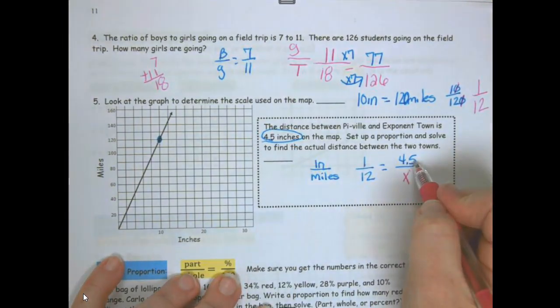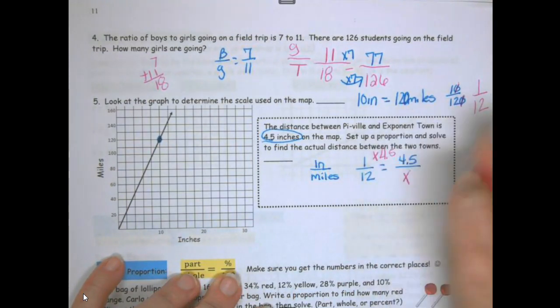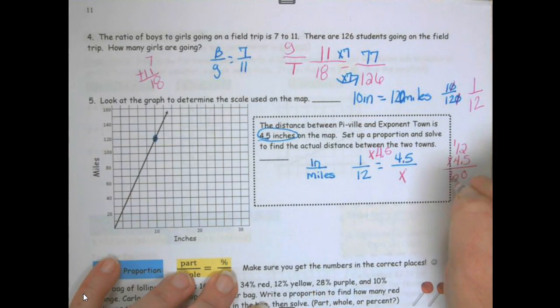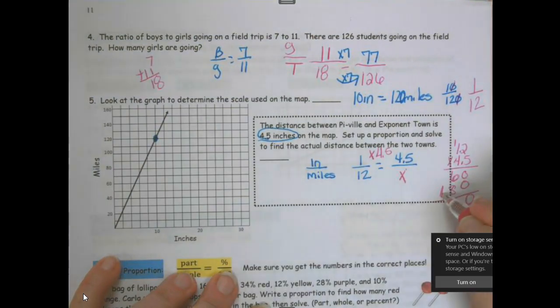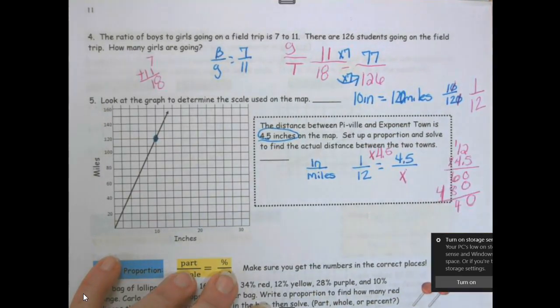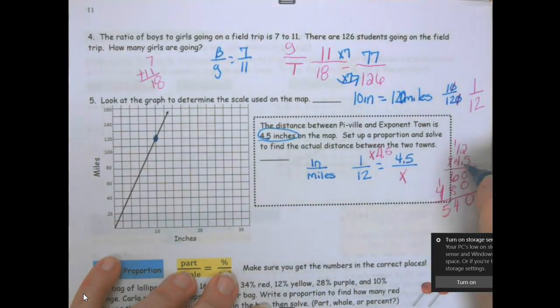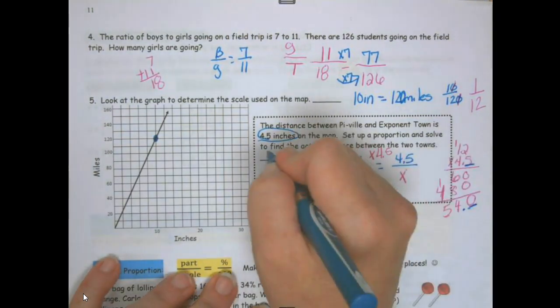How does 1 go to 4.5? We multiply by 4.5. So 12 times 4.5. 5 times 2 is 10. 6 plus 8 is 14. 4 times 2 is 8. 4 times 1 is 4. I have one number after the decimal so I have to have one number after my decimal here so my answer is 54 miles.